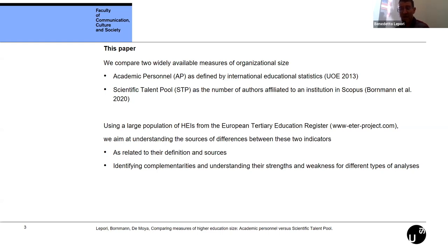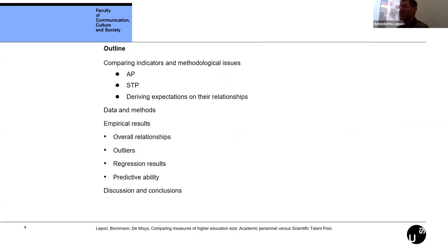We use a large population of higher education institutions from the European Tertiary Education Register — basically the full roster of publishing institutions in Europe. We aim to understand the sources of differences between these indicators, show they are related, and show where differences come from depending on definition and sources. We also want to identify complementarities and understand the strengths and weaknesses for different types of analysis.